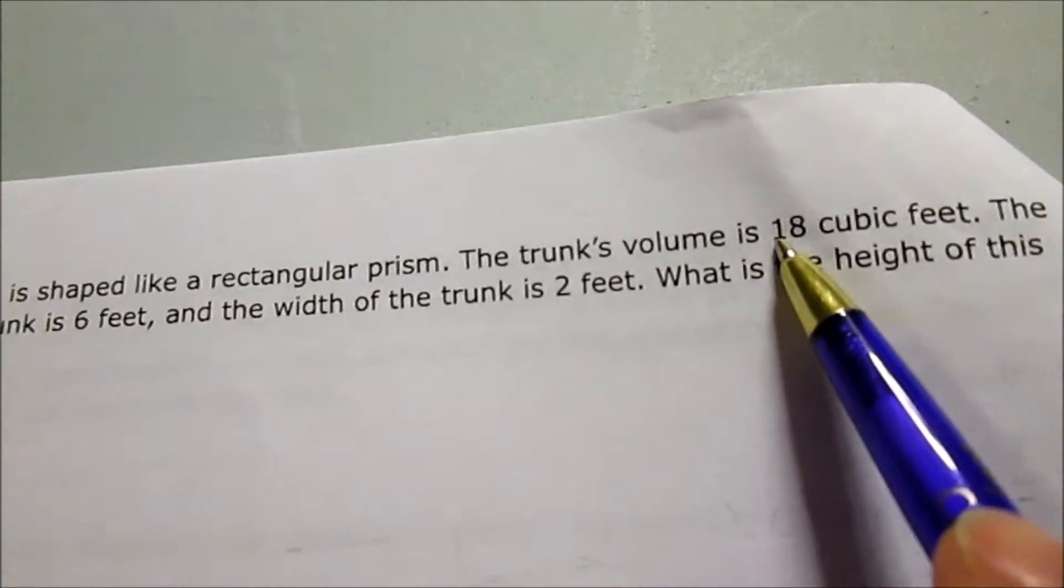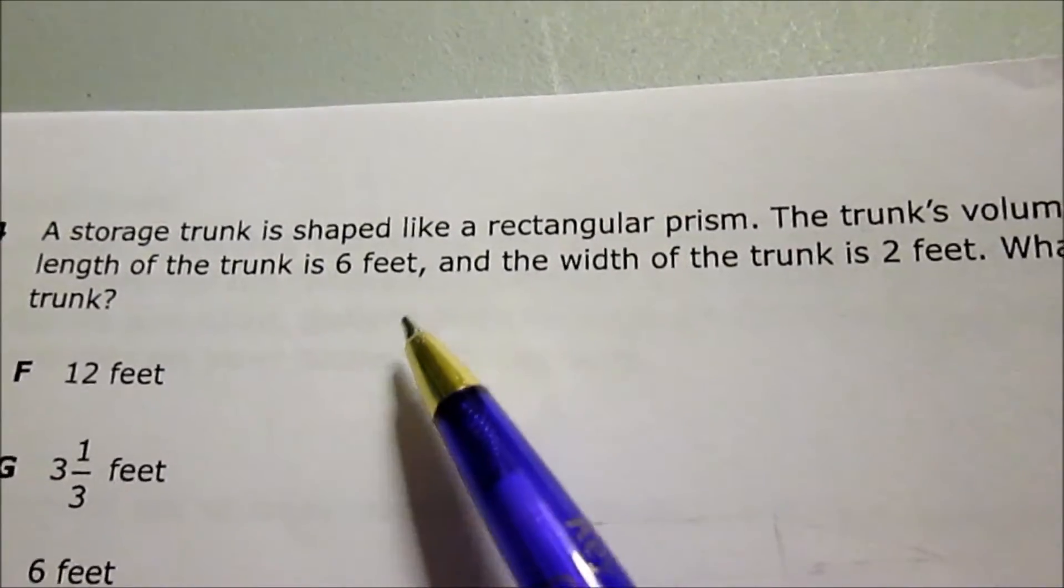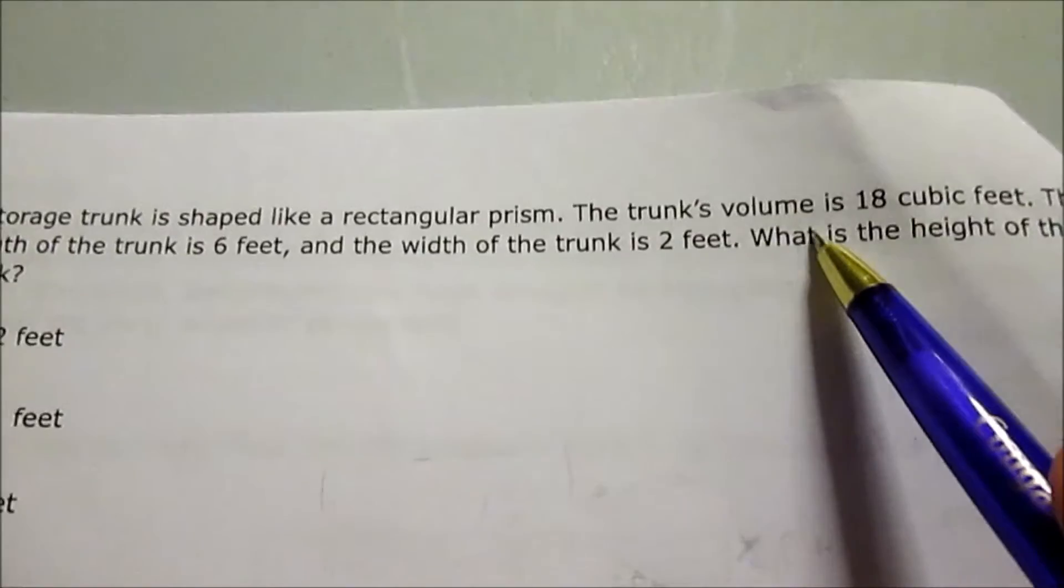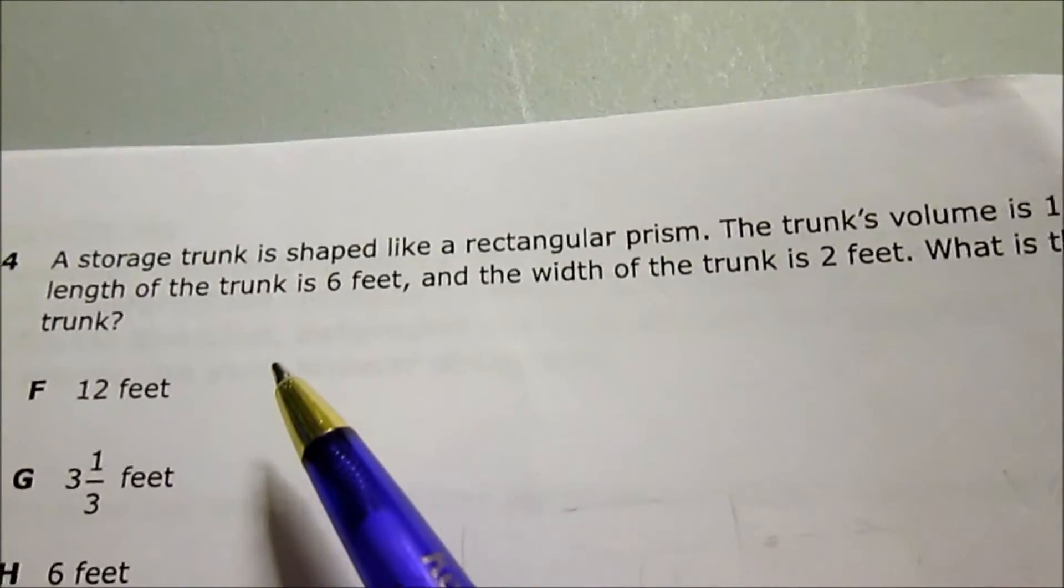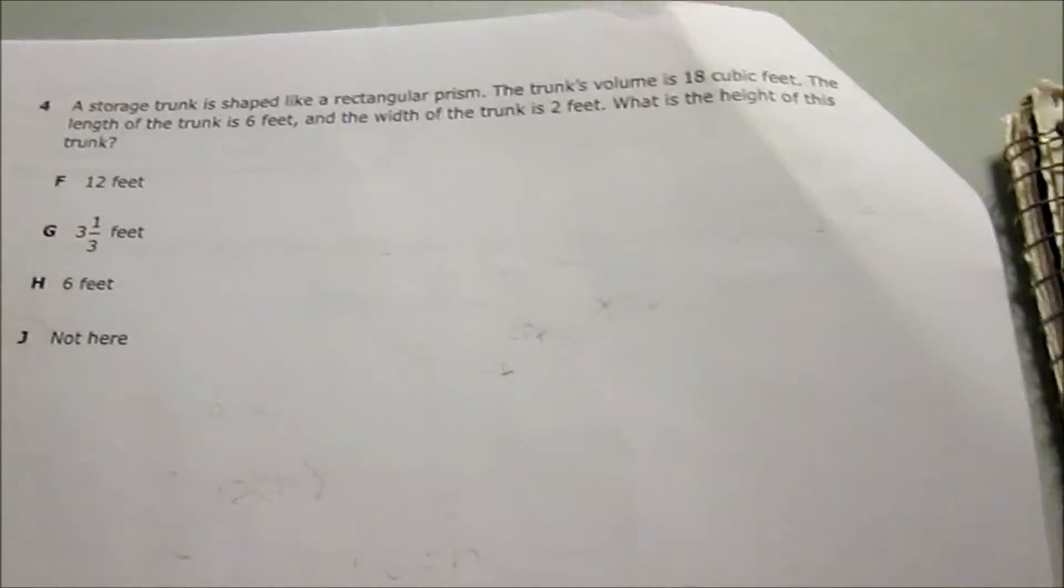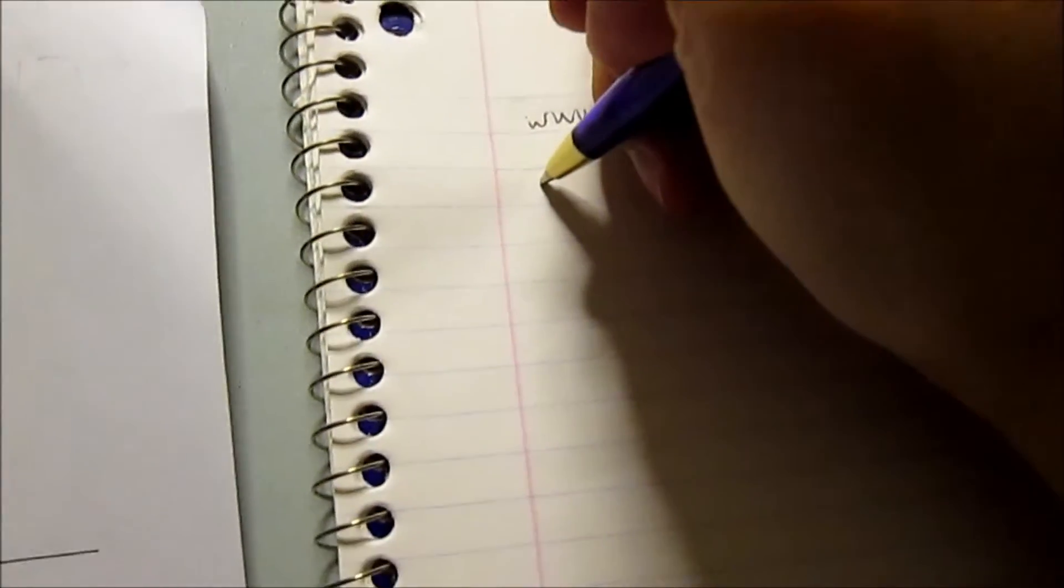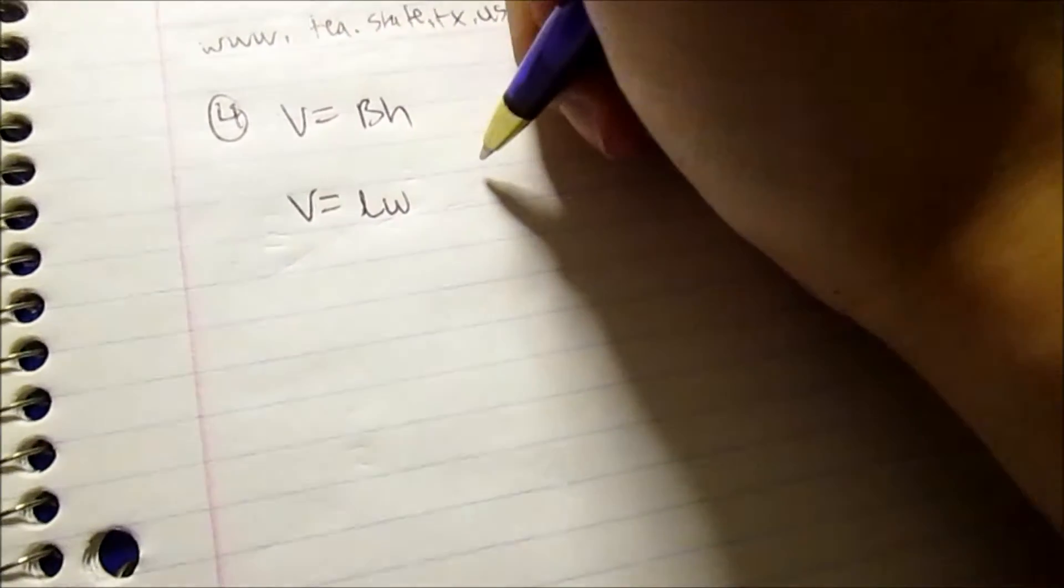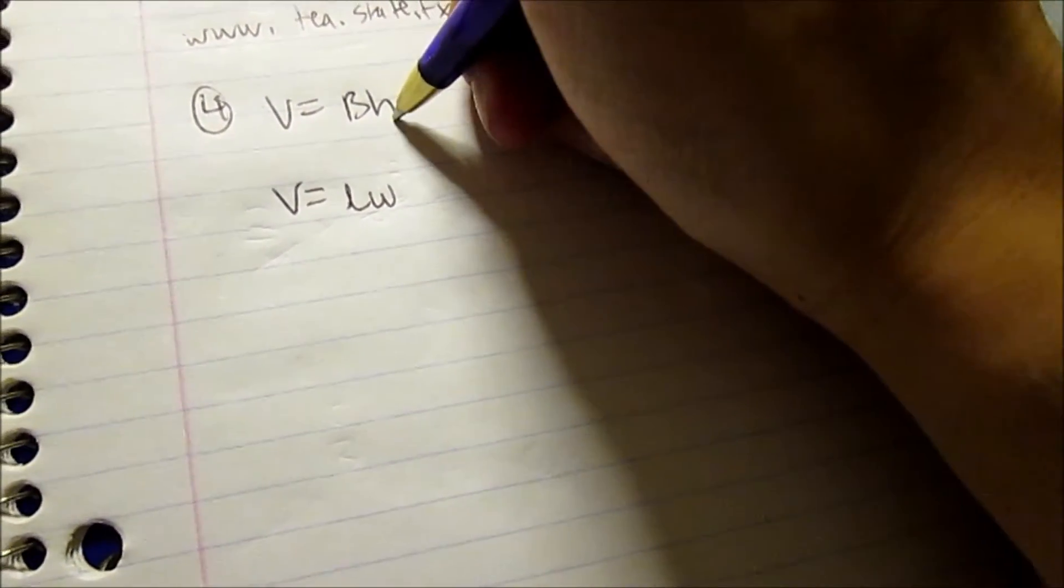We have a rectangular prism. It has the volume, it has the length, it has the width, it's just missing the height of this trunk. Basically, to find volume, you use the formula. The formula is V equals capital B times H. And in rectangular prisms, to find the capital B, which is base area, you just find the area of a rectangle: L times W, and at the end, put H. So length times width times height.